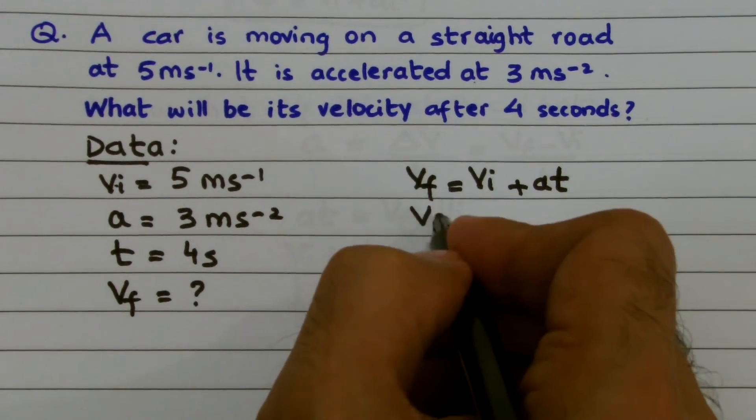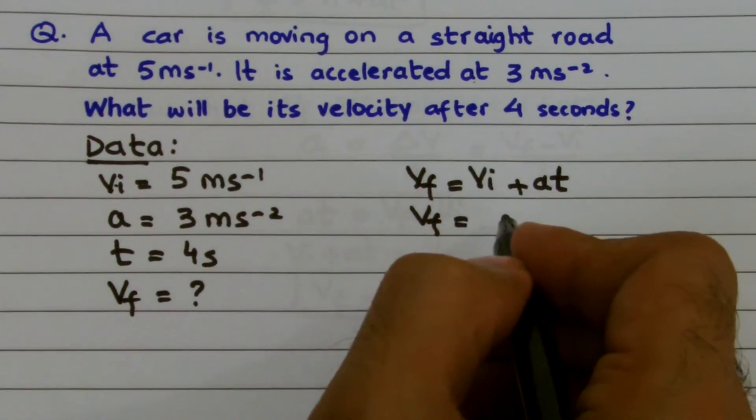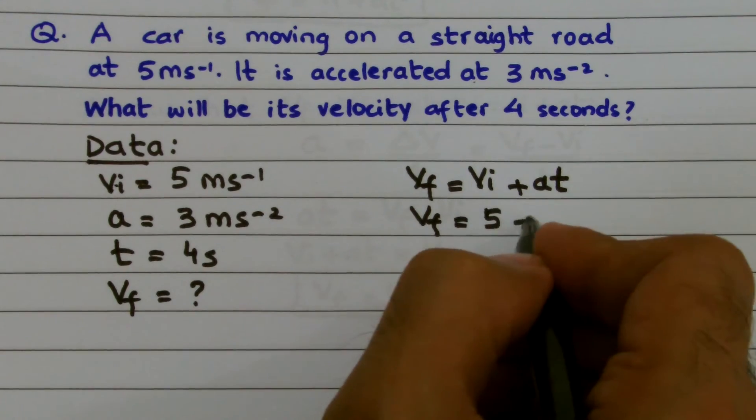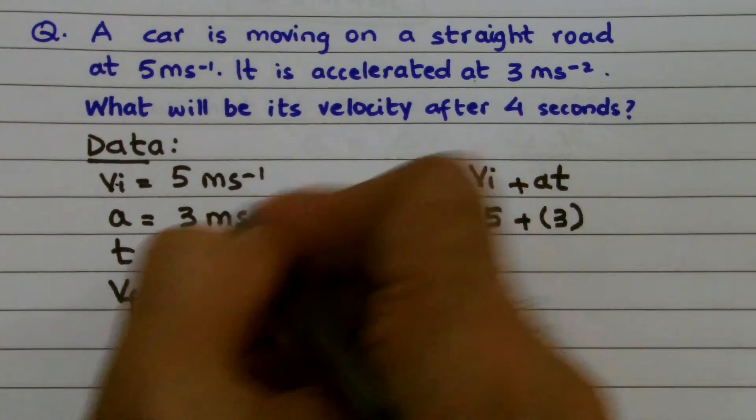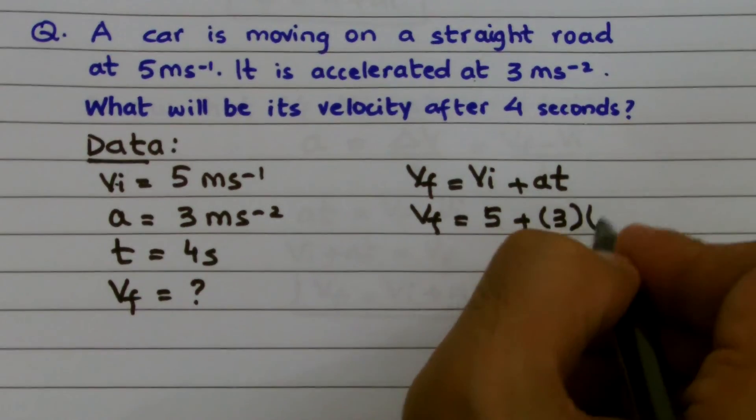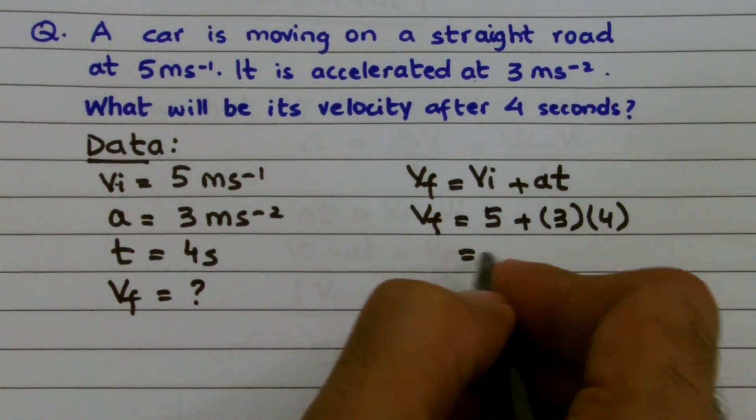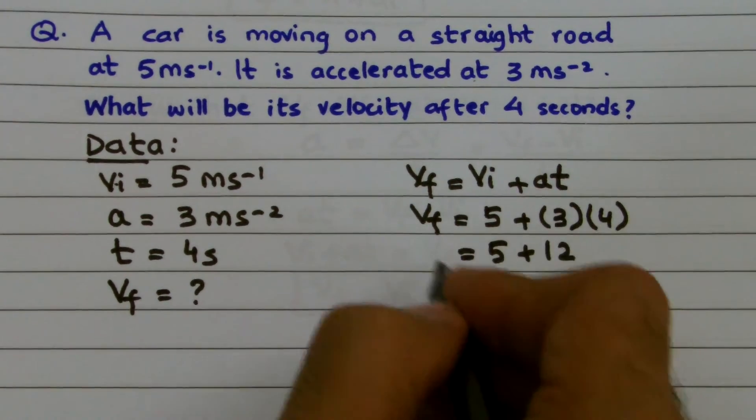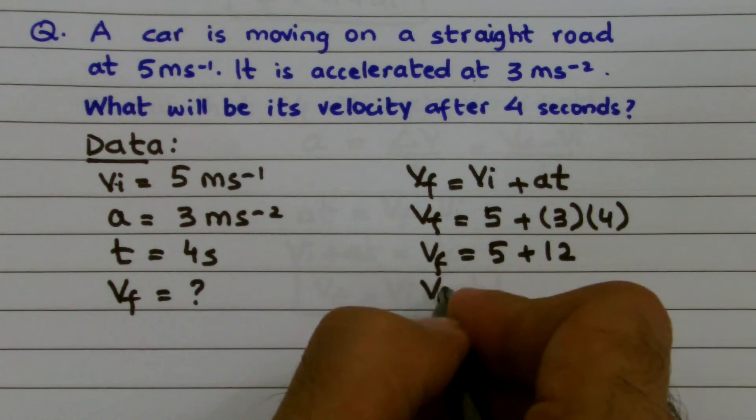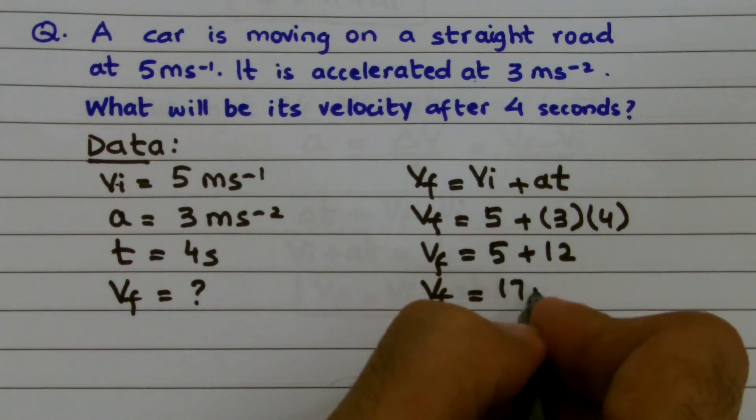In the next step I get VF = 5 + (3)(4). The value of VI is 5, acceleration is 3, time is 4 seconds. So I get 5 plus 3 times 4 is 12. Finally, the value of VF becomes 17 meters per second.